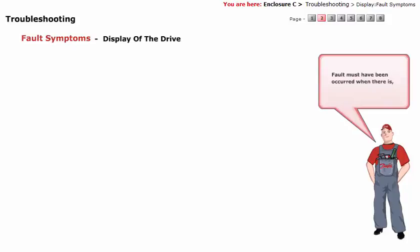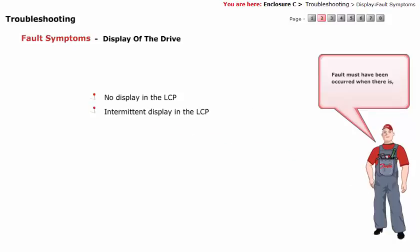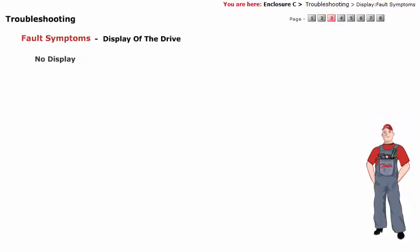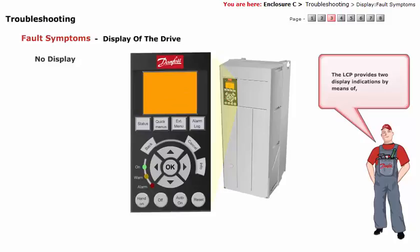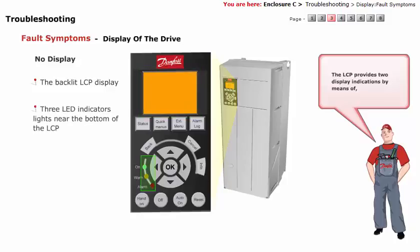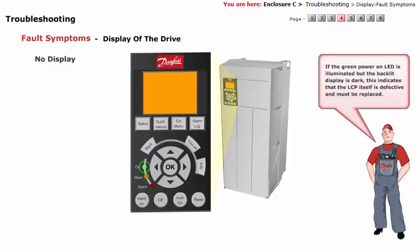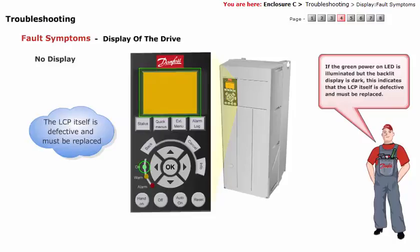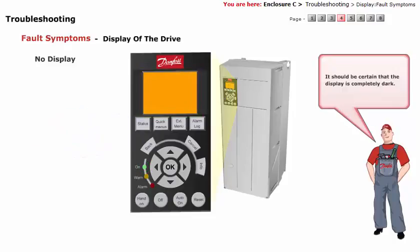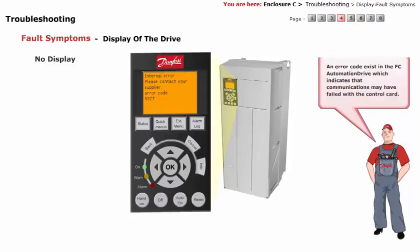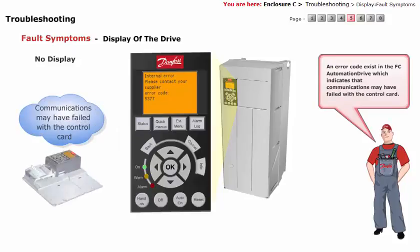A fault may have occurred when there is no display in the LCP, or there is an intermittent display in the LCP. The LCP provides two display indications by means of the backlit LCP display and three LED indicator lights near the bottom of the LCP. If the green power-on LED is illuminated but the backlit display is dark, this indicates that the LCP itself is defective and must be replaced. It should be certain that the display is completely dark.